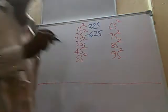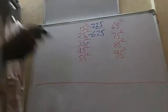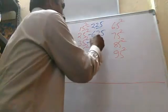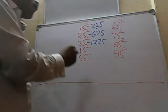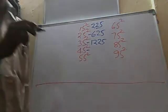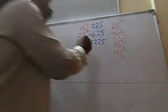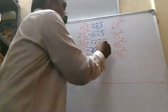Next, 35². The 10th digit is 3, after that is 4. 3 into 4 is equal to 12, so 1225. Now 45². The 10th digit is 4, after that is 5. 4 into 5 is equal to 20, so 2025.